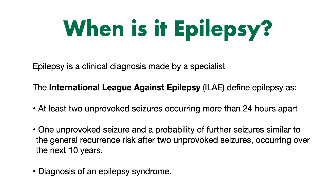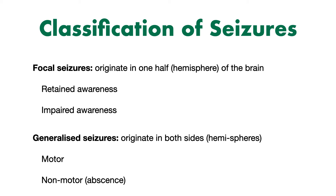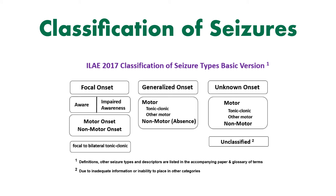Let's think about the classification of seizures. Broadly, we can split seizures into focal seizures and generalised seizures. Focal seizures originate in one half or hemisphere of the brain, whereas generalised seizures originate in both hemispheres. With focal seizures, you can further split them into whether the patient retains awareness or has impaired awareness during the episode. With generalised seizures, you can split these into motor — where there are motor signs such as limb jerking — or non-motor features, which is the new term for absence seizures. The International League Against Epilepsy has produced guidance on the classification of seizures, and this is a simplified version of their classification system.